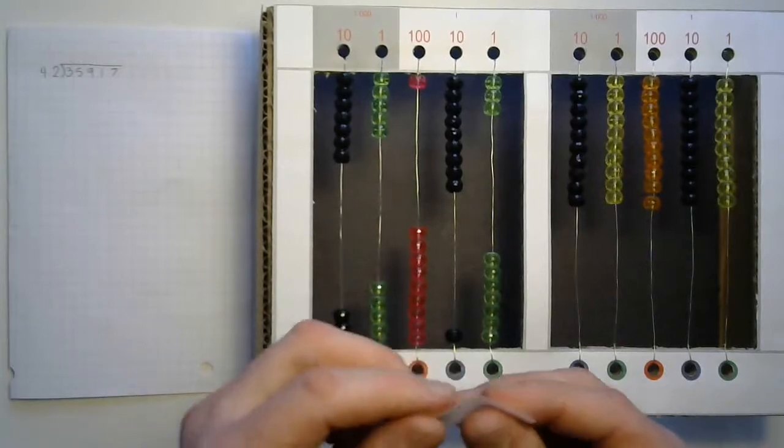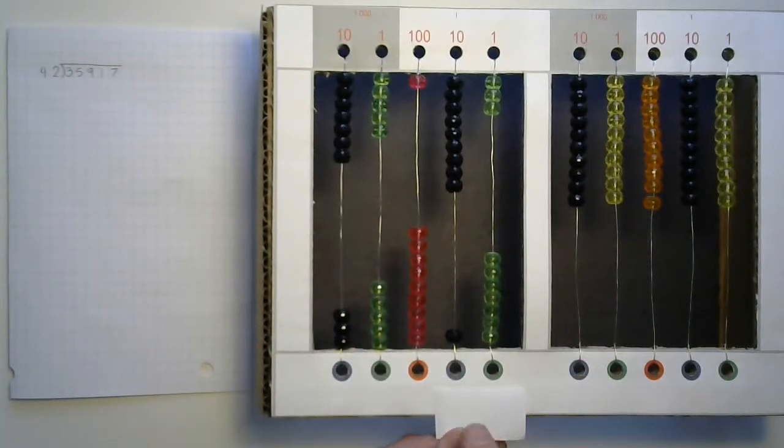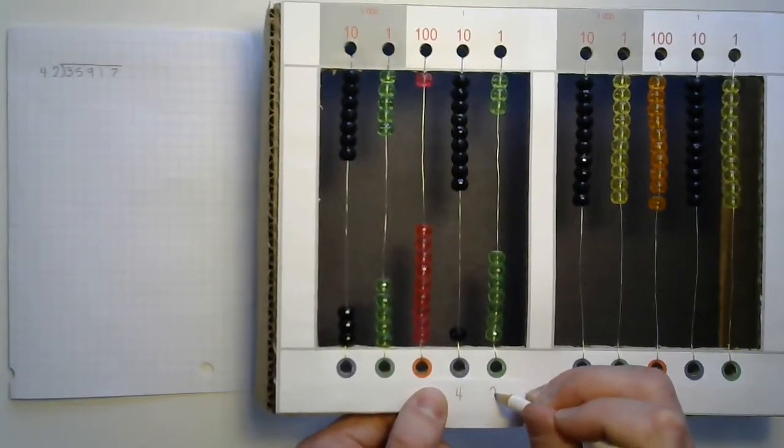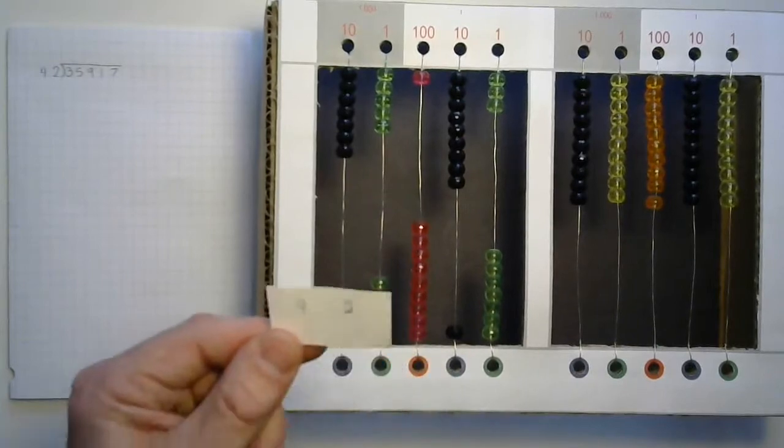And our divisor will write on a strip of paper, making sure to line it up with these categorical holes. So four tens, two units. There we go.